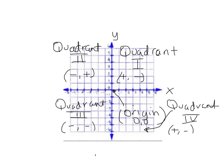Quadrant three, where you have negative x-values and negative y-values. And quadrant four, where you have positive x-values and negative y-values. Please make sure you have this diagram in your notes.